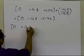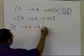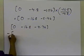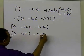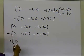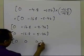I have 0, minus 16.8, minus 4.76, and I have to subtract 0, minus 16.8, and minus 5.46, and what I'm going to get is 0, 0, and 0.7.